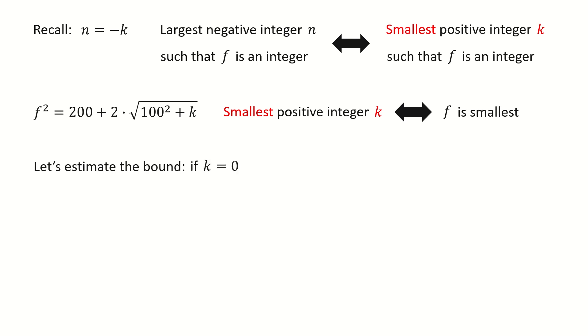Suppose k equals 0, then the right-hand side equals 400, so we can solve for f which equals 20. Surely k is not 0 because k is positive, so that means f must be greater than 20.